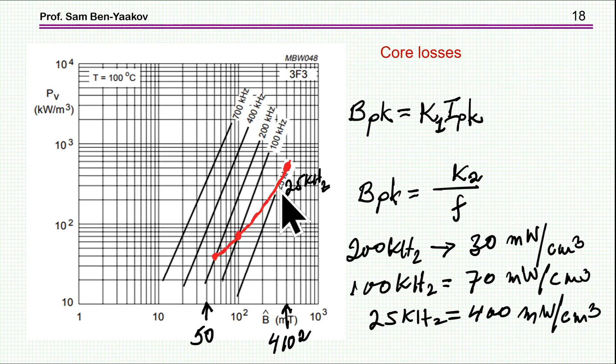And then if I go to 25 kilohertz, which is a lower frequency, which is four times lower, then the losses become very high. So clearly what is more important here is the fact that the B_peak is changing rather than the frequency.